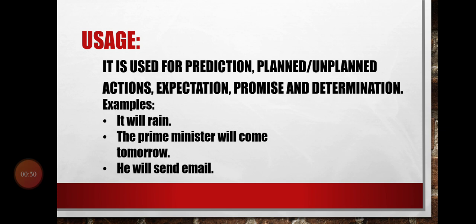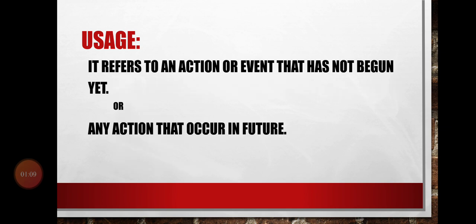Here is the usage: Future Indefinite is used for prediction, planned or unplanned action, expectation, promise, and determination. For example, 'It will rain' — that is a prediction. 'The prime minister will come tomorrow' — that is a planned or unplanned action. 'He will send an email' — that can be expectation, promise, or determination.